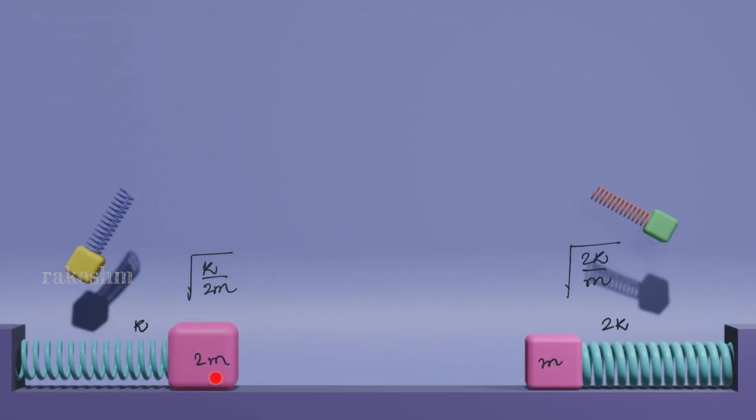So let us now look at the oscillation of these two blocks individually. If these two blocks were to oscillate individually, the angular frequency of this would be root k by 2m and this would be root 2k by m. Which means if the angular frequency of this spring block system is omega, then this spring block system will be 2 times omega.